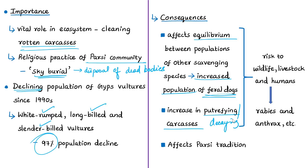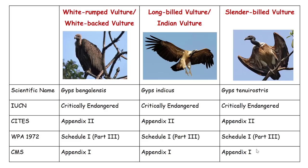The absence of proper carcass disposal mechanisms means vulture decline leads to an increase in putrefying animal carcasses in the countryside. Both the increase in putrefying carcasses and changes in scavenger populations have associated disease risks for wildlife, livestock, and humans. With increasing feral dogs there is an increased risk of spread of rabies and livestock-borne diseases like anthrax. The decline in vulture population has also affected the traditional customs of the Parsi community.